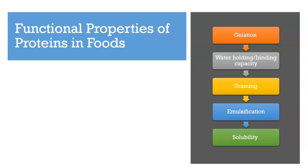Another functional property of proteins is emulsification. Emulsification is the process of dispersing two or more immiscible liquids together, resulting in a semi-stable mixture. Proteins are very good at stabilizing these emulsions and play a very important role in emulsification.